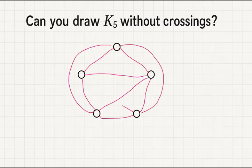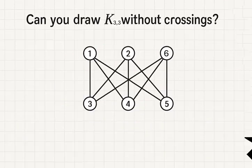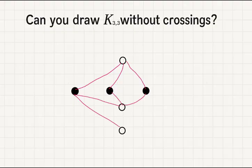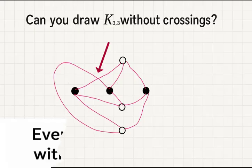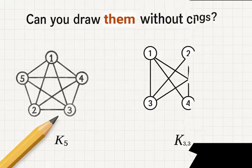But here's the twist. No matter how hard you try, you'll always end up with at least one pair of edges crossing. And the same goes for another graph called K33, the complete bipartite graph with three vertices in each group. So today, we're going to answer this question. Why are K5 and K33 not planar graphs?